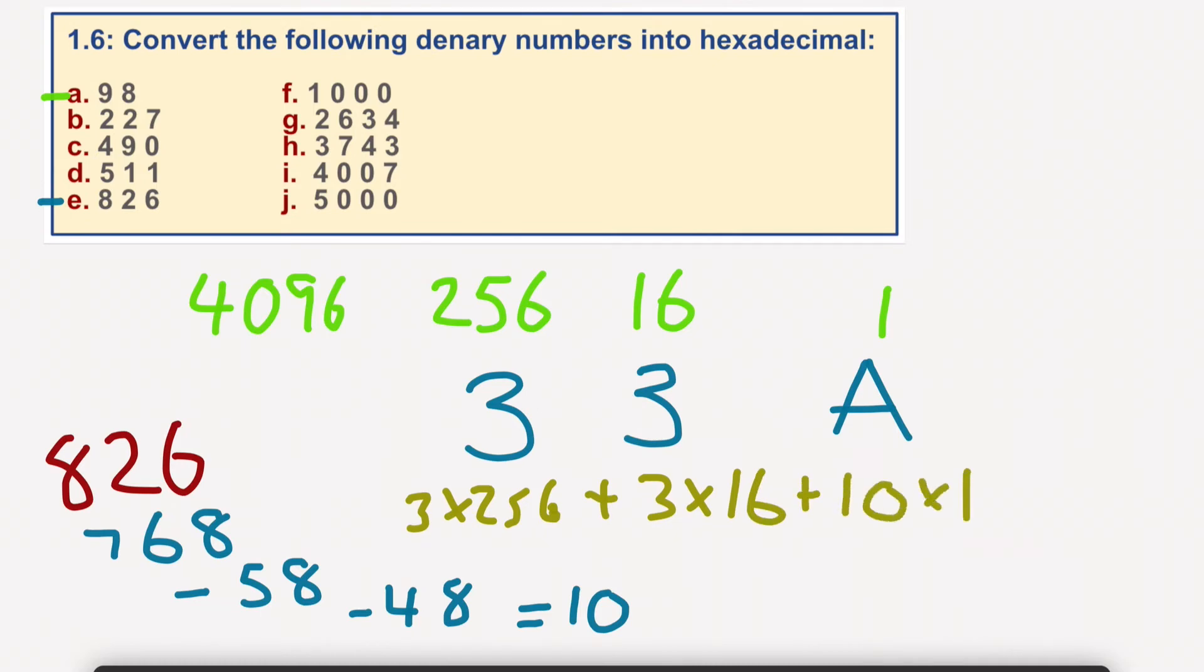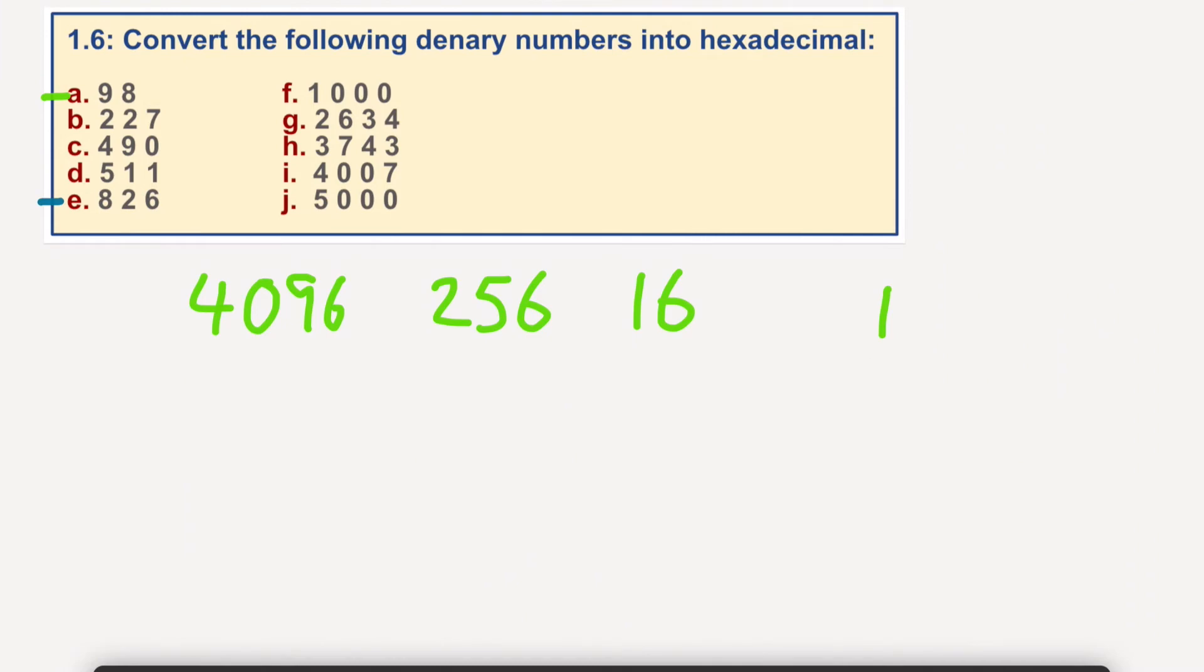Okay, so we'll do one more. This time we'll have a little go at J, 5000. Now, obviously, I've left this on the screen. 4096 goes in one time. So we could then take that, like I did before, take that away from that. 5000 take away 4096.